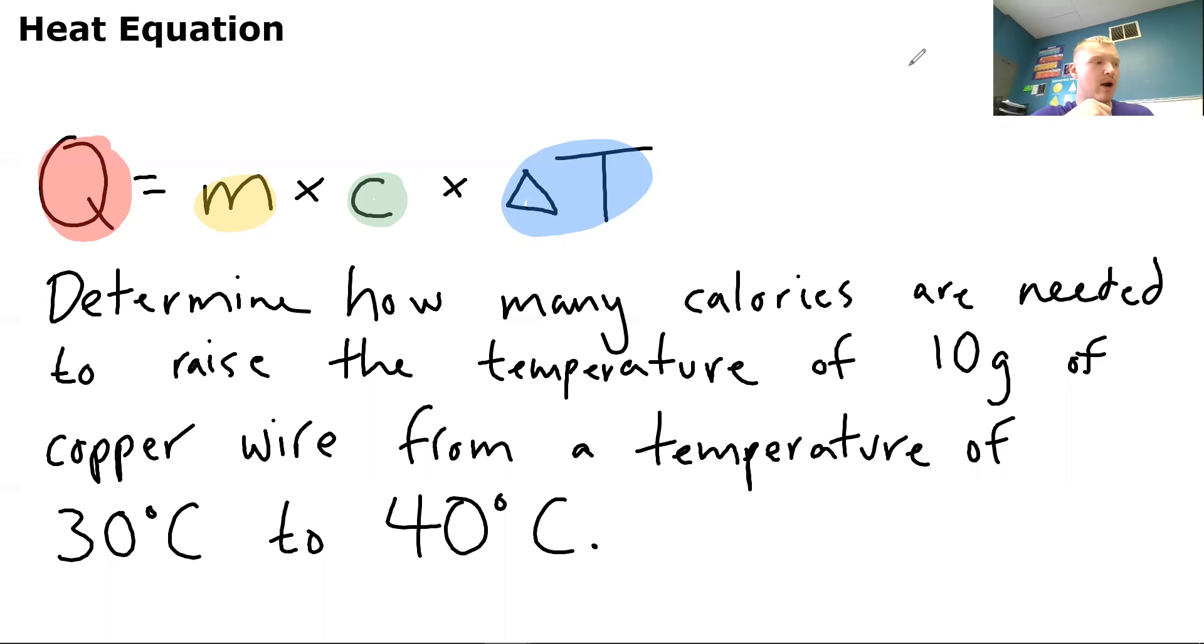So we are working with a copper wire, right? A copper wire. So that value is in your chart. And we are working with calories. So it wants to know calories. So make sure you pick the calories value rather than the joules value. That's an important piece of information right there. We are working in calories. So pause the video. Give this example a try.